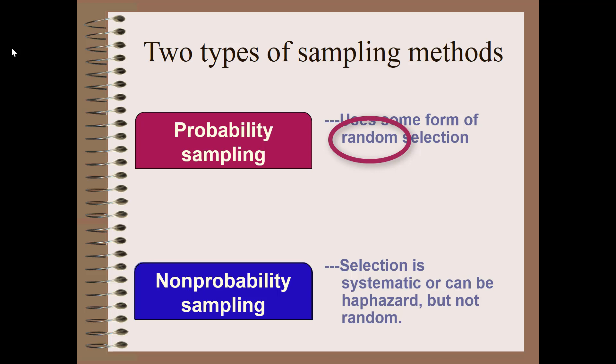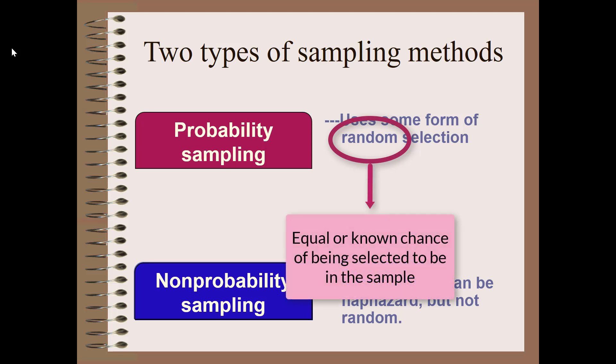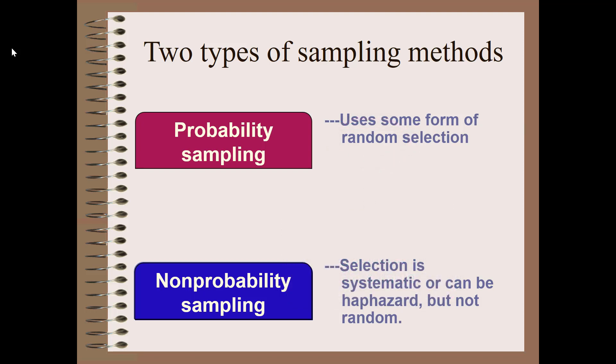Randomness, when it comes to selecting a sample, generally ensures that the sample is a good representation of the population, because everyone in the study population, or that was on the sampling frame, has an equal or known chance of being selected to be in the study. So any individual differences essentially wash out. But sometimes, depending on the research question and the population, it's not possible to get a random sample, and then we use non-probability sampling methods.